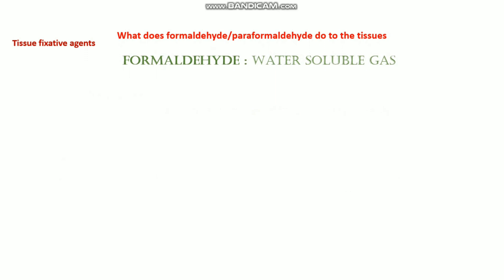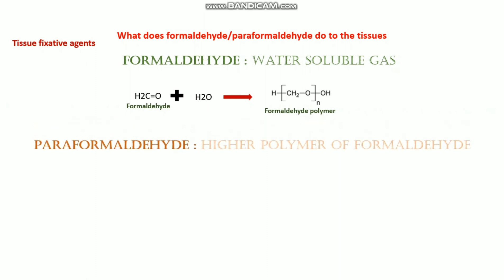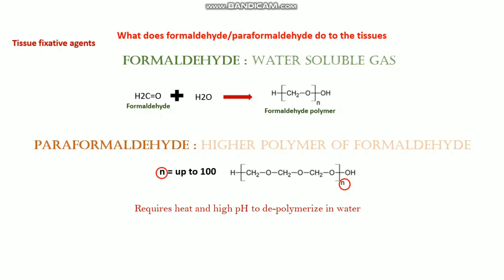Next, we need to know what formaldehyde and paraffin-embedded fixatives do to the tissues, as these are the most commonly used fixative agents. Formaldehyde is a water-soluble gas that forms a formaldehyde polymer with water, whereas paraformaldehyde is a higher polymer of formaldehyde where the polymer chain can be up to 100 units. In the case of paraformaldehyde, heat and high pH are required to depolymerize it in water.